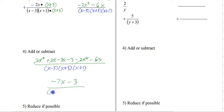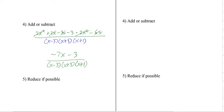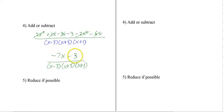All over x minus 3, x plus 3, x plus 1. And the last step is always reduce your fraction if you can. But since we cannot factor the top, we're done. That is the final answer.